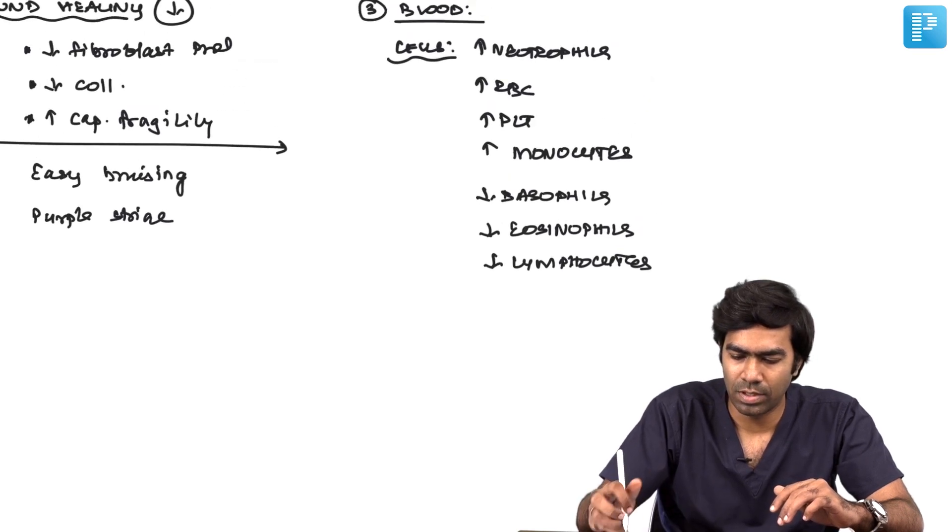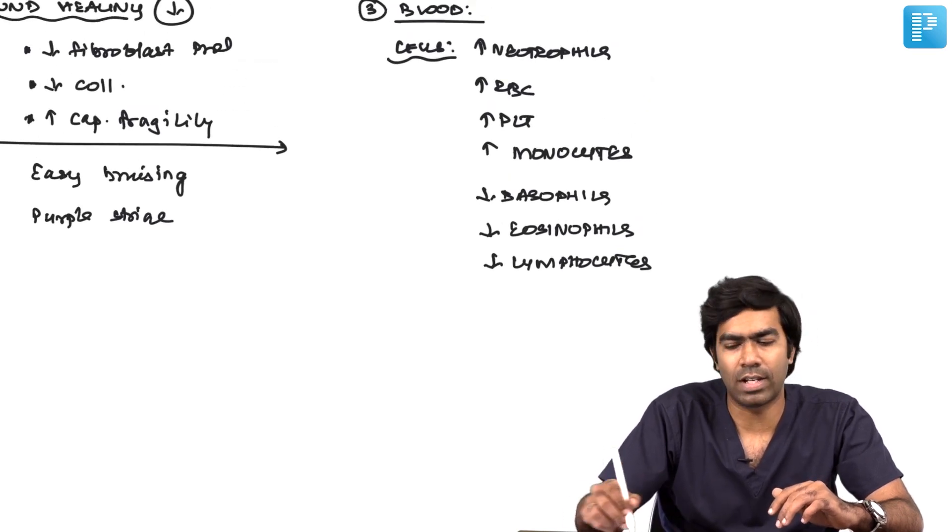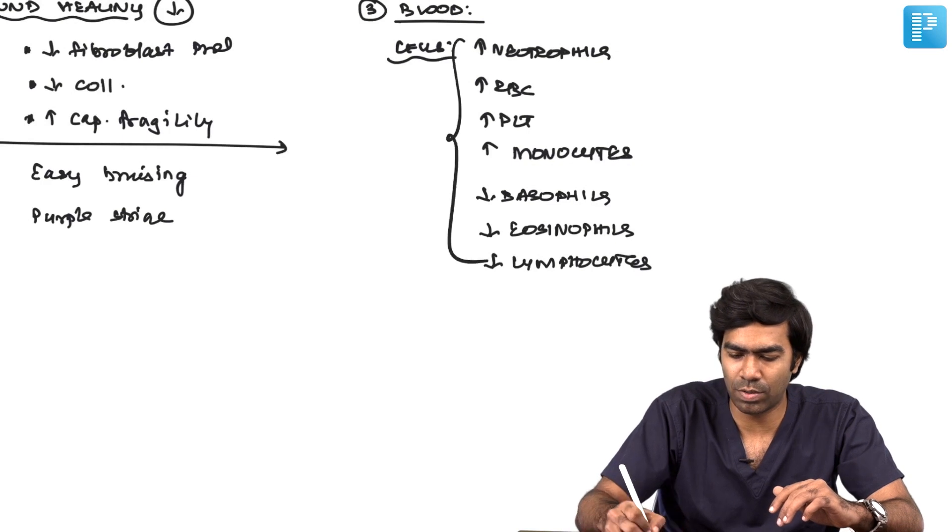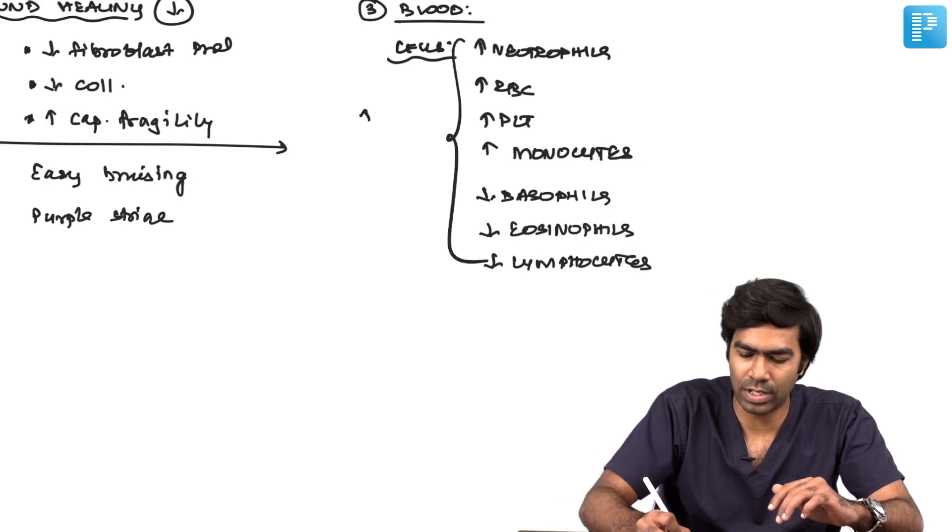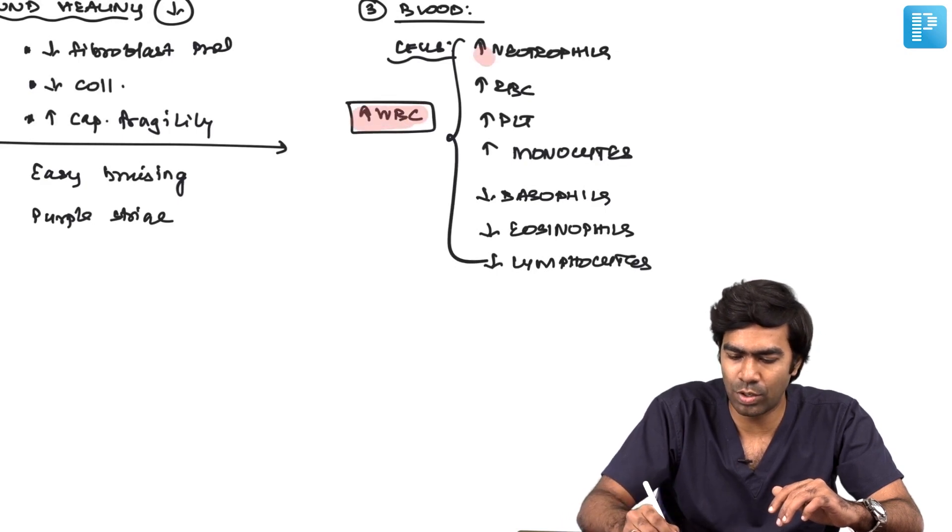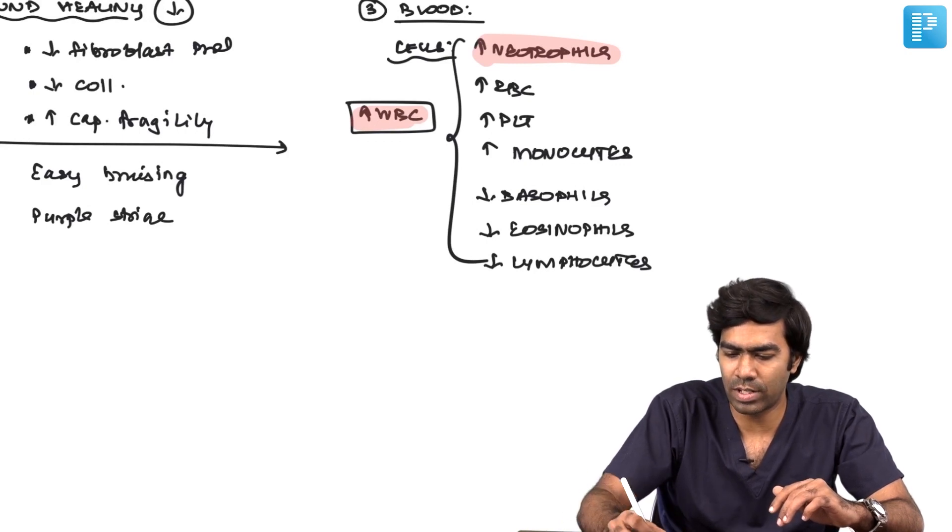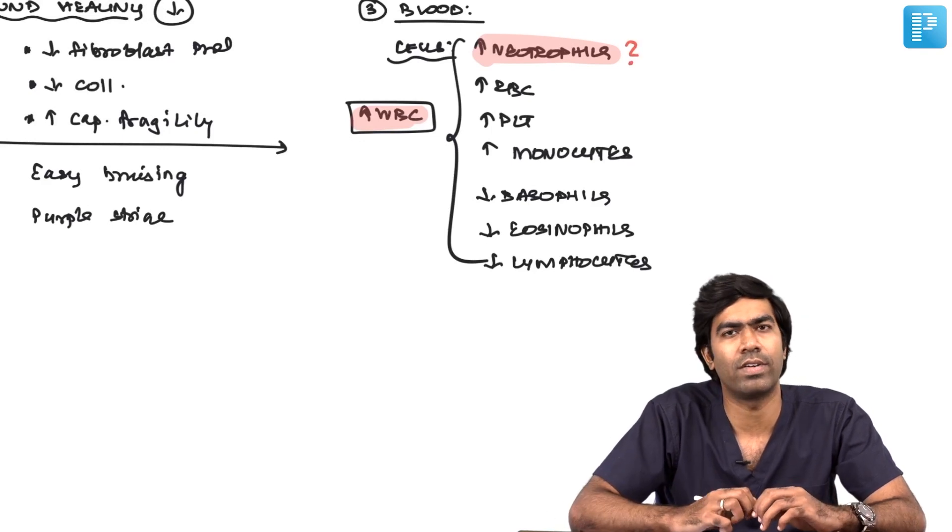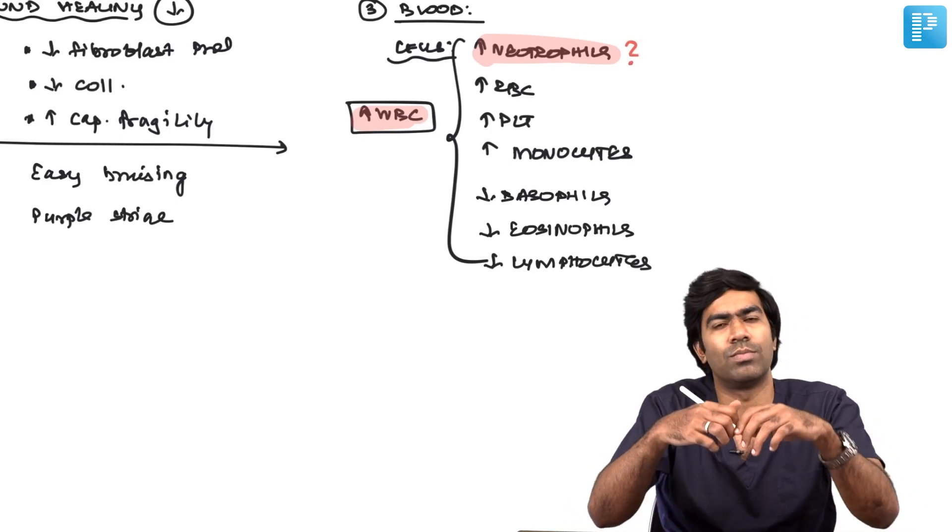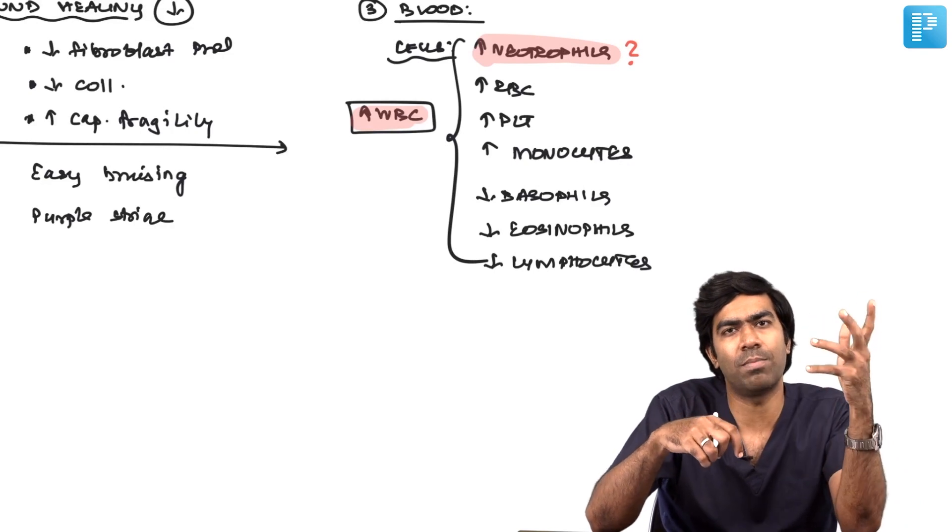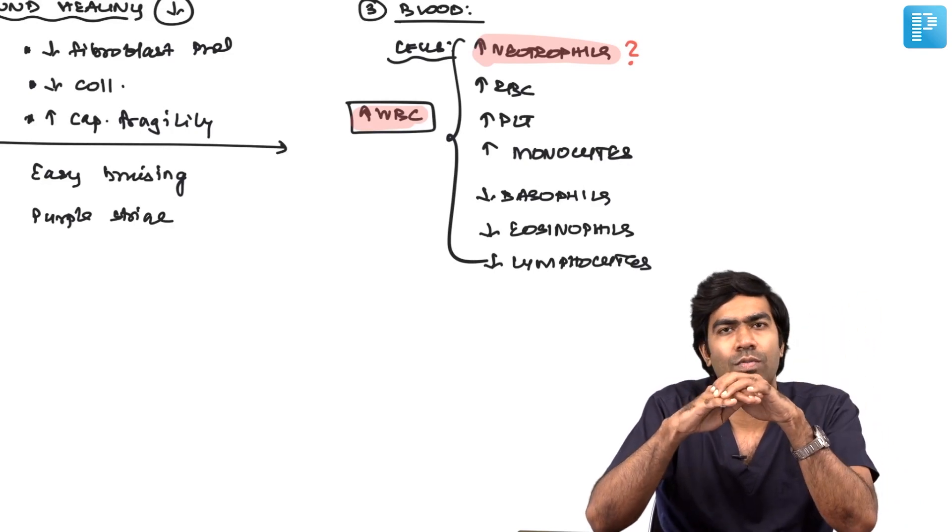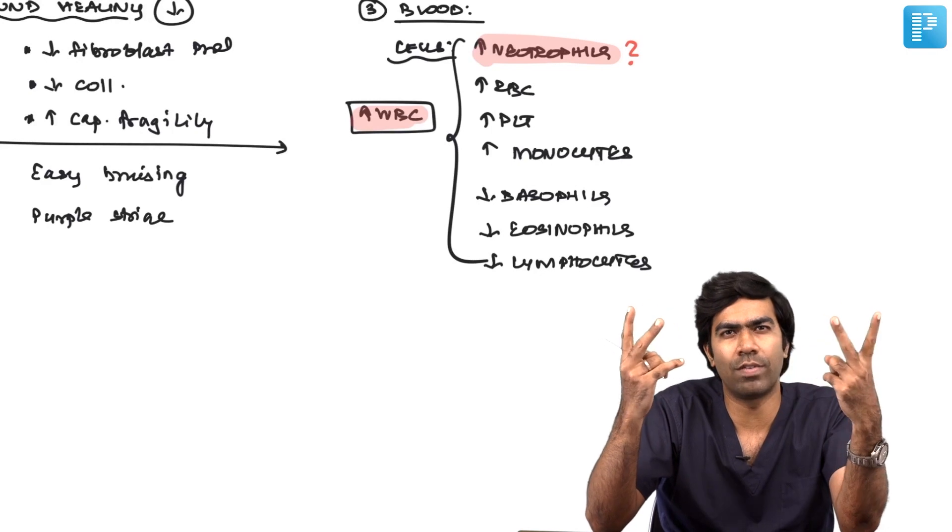Even though many effects are seen on different cell groups, the net effect is to increase WBC - most importantly due to increased neutrophils. Why are neutrophils increased? You have to say it is due to demargination. At any point in time, your neutrophil is divided into two pools: marginated pool and circulating pool.